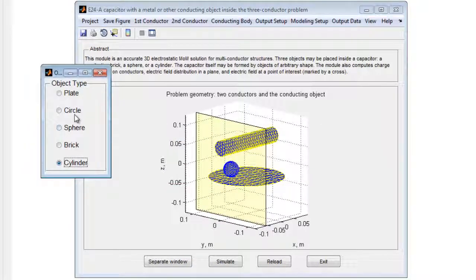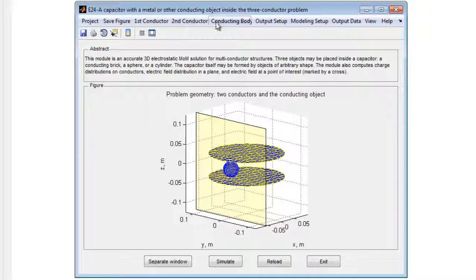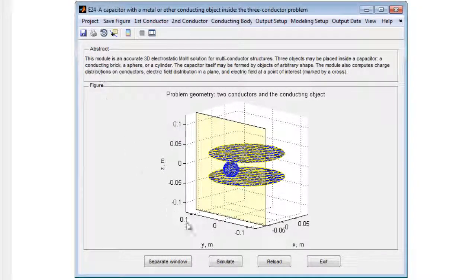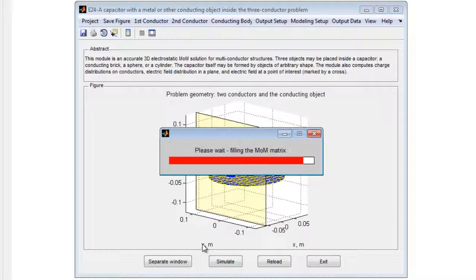The type and parameters of the inner conducting body may be changed using the conducting body menu. The parameters for individual objects include size, center position, rotation about an axis, and the number of triangles used in the simulation.